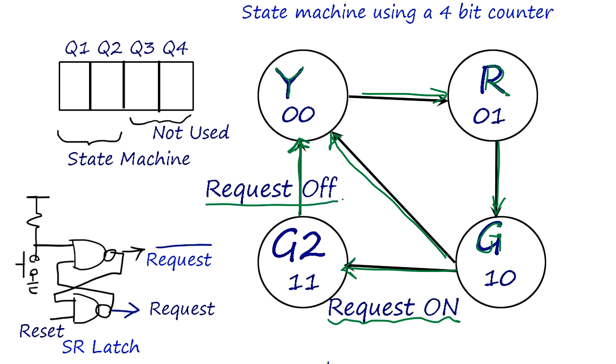The request can come at any time. After yellow, the request is turned on and stays on, then instead of going back to yellow it goes to extended mode.